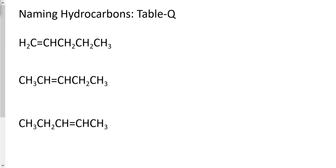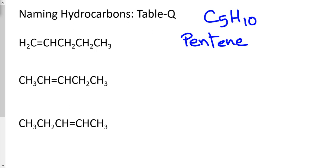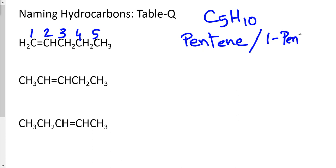Pause the video and practice the following compounds, then play to check your understanding. For the first one, we have 5 carbons and 10 hydrogens — exactly double — so the suffix is -ene and the prefix is 'pent', giving pentene. Counting from left to right, the double bond is between the first and second carbon, so you can write pentene or 1-pentene; both are correct answers.